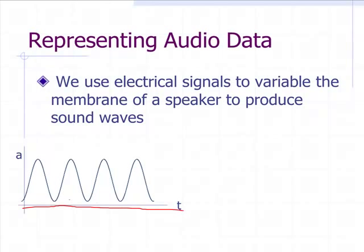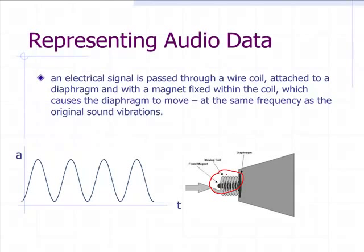This is our electrical signal here over time. The electrical signal has an amplitude of how much voltage is going through to the speaker. An electric signal is passed through a wire coil attached to a diaphragm with a magnet fixed within the coil, which causes the diaphragm to move at the same frequency as the original sound vibrations.